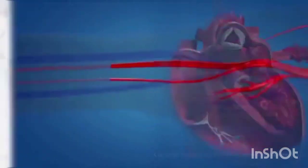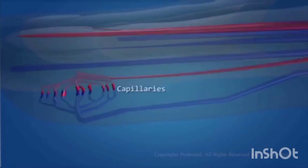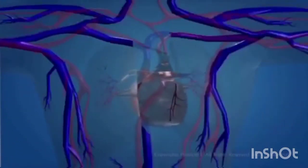As the ventricle contracts, oxygen-rich blood leaves the heart through the aortic valve into the aorta and into the arteries and eventually into the veins to complete the blood circulation in your body.